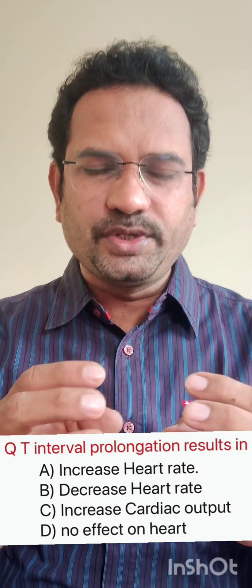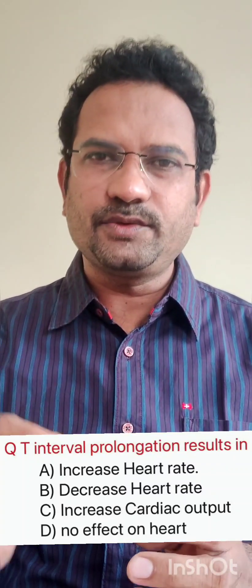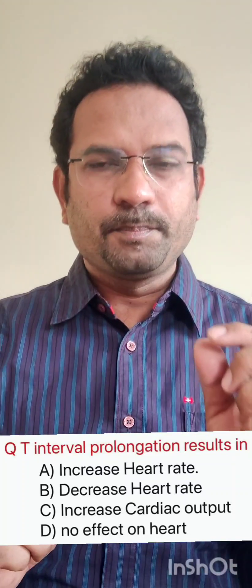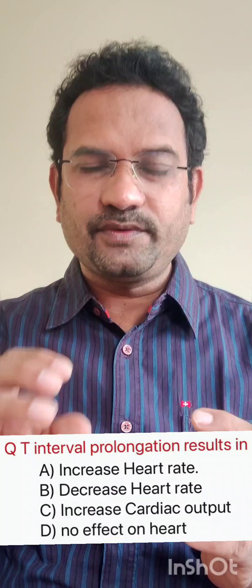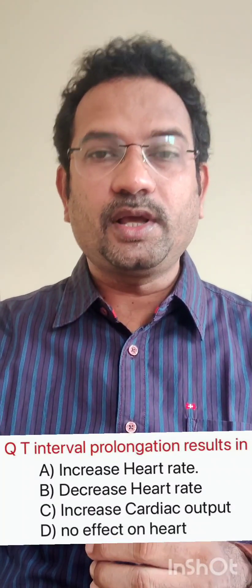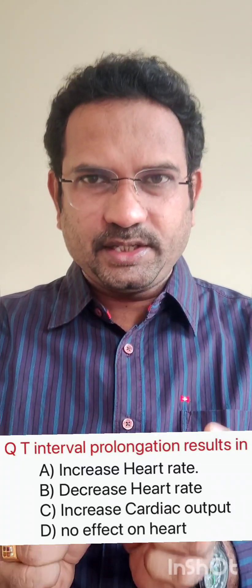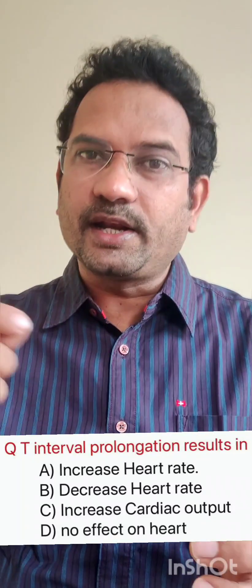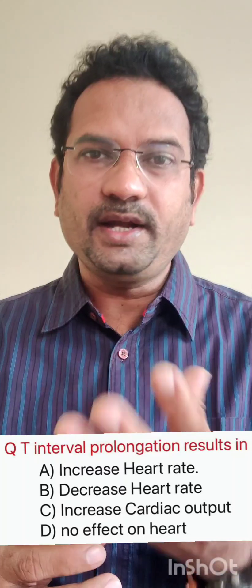Now let us understand about QT interval. This QT interval is related to ECG. In ECG we have waves: P wave, QRS wave, and T wave. P wave indicates atrial depolarization, QRS wave indicates ventricular depolarization, T wave indicates ventricular repolarization. So the distance between Q and T indicates ventricular depolarization and repolarization — that means the time taken for ventricular contraction and relaxation.